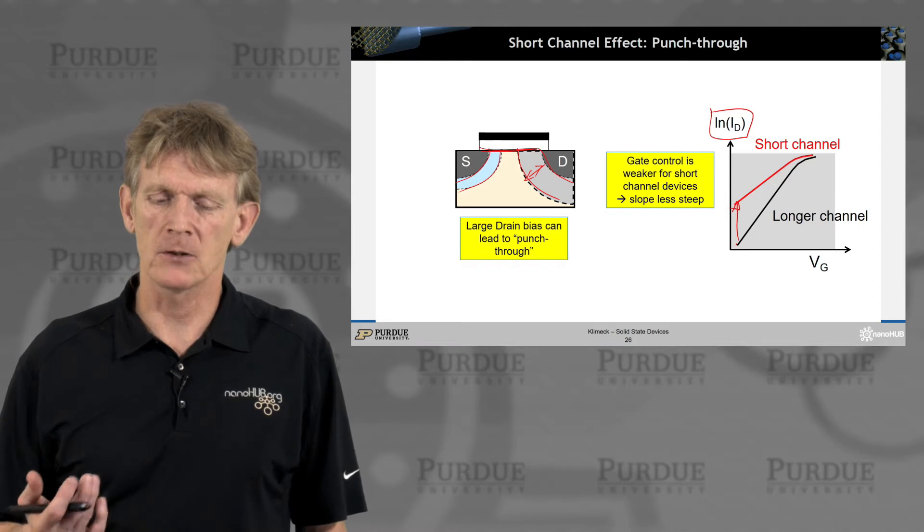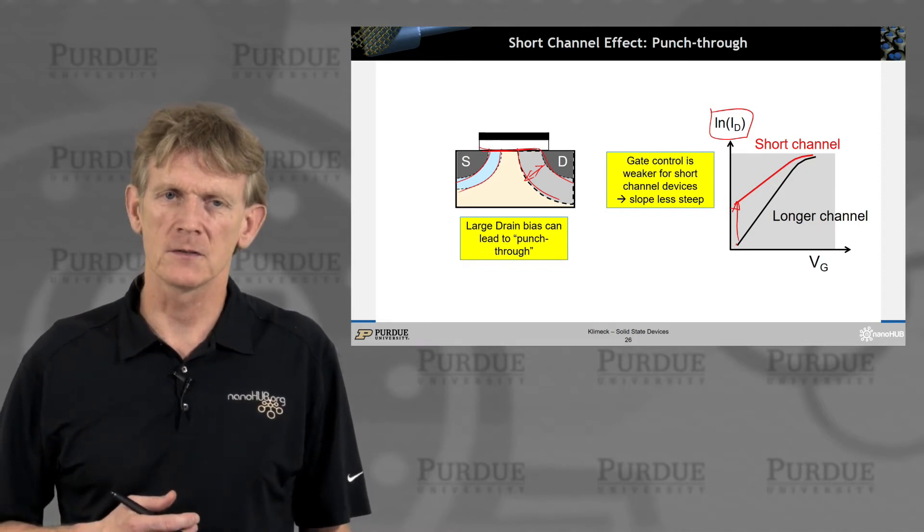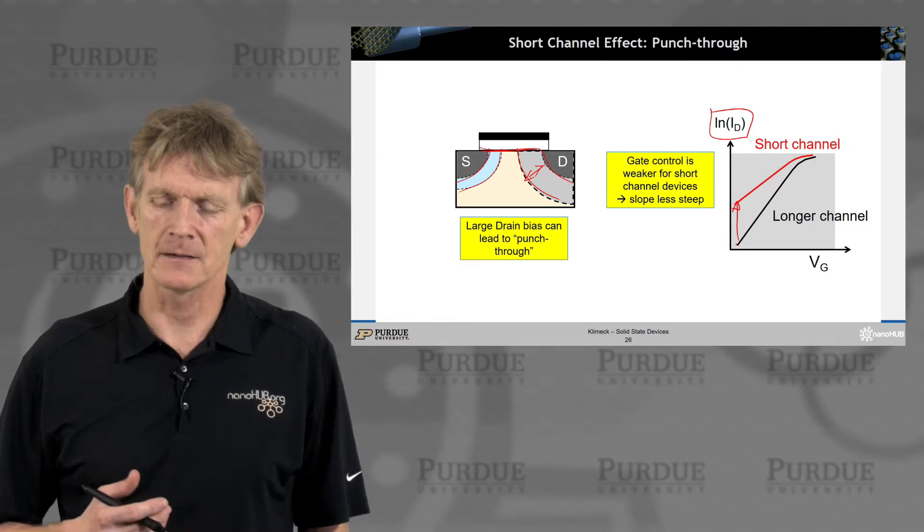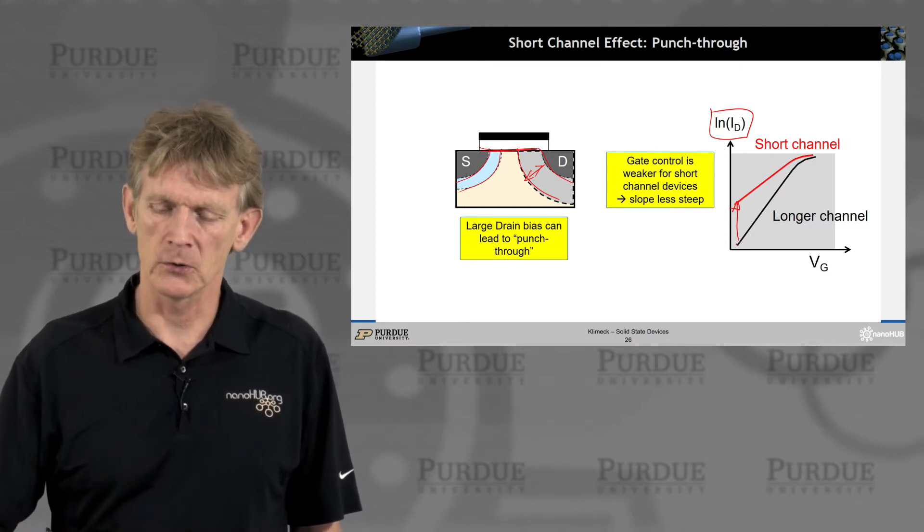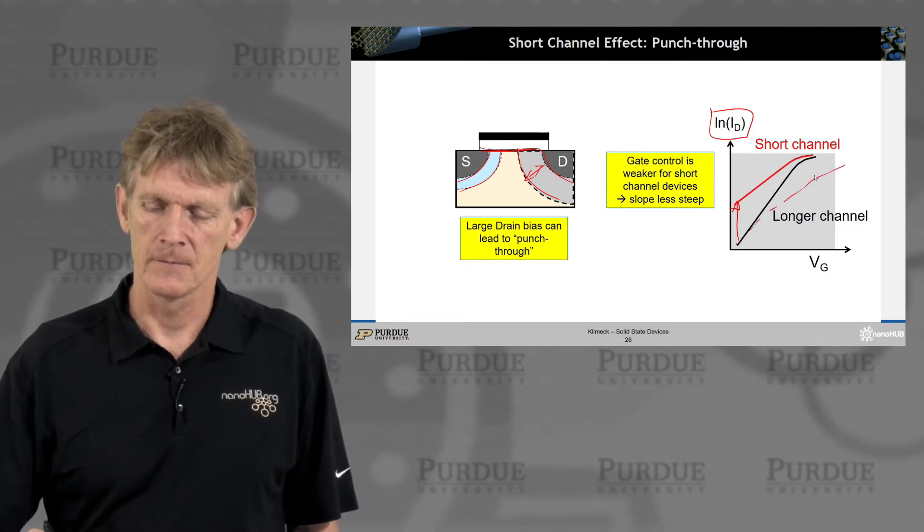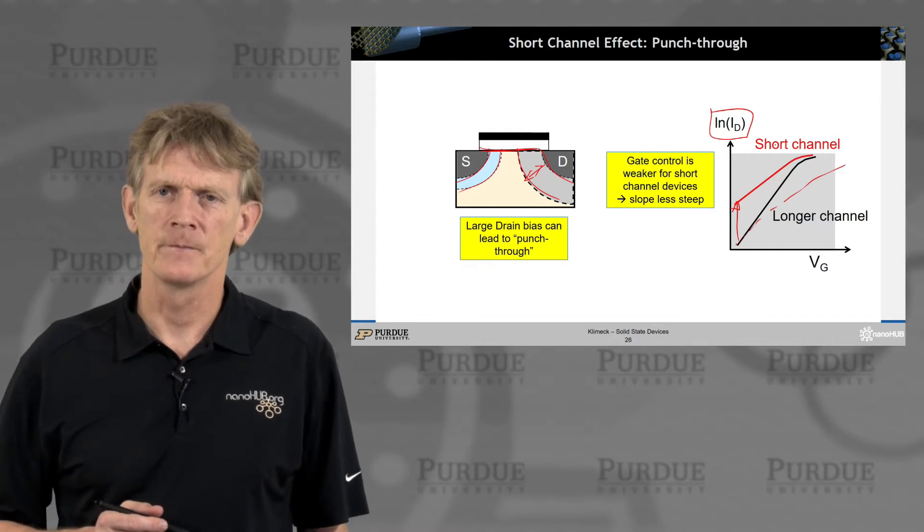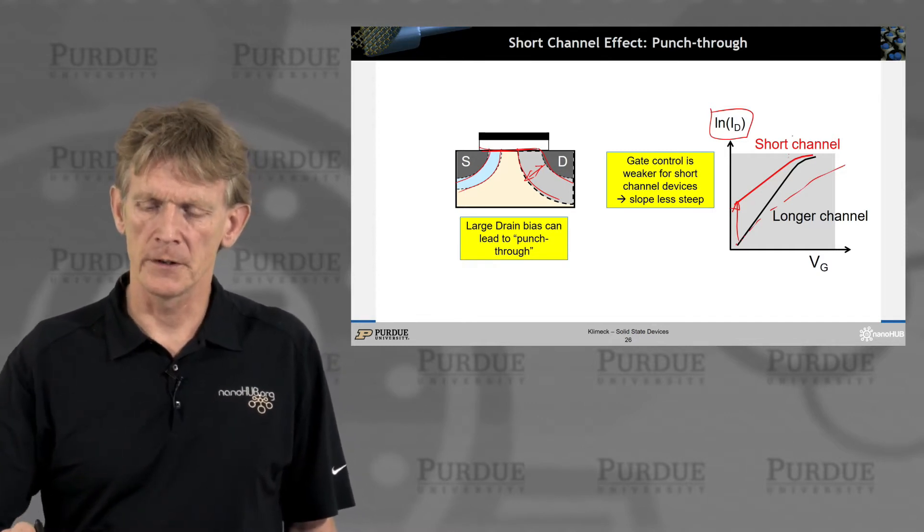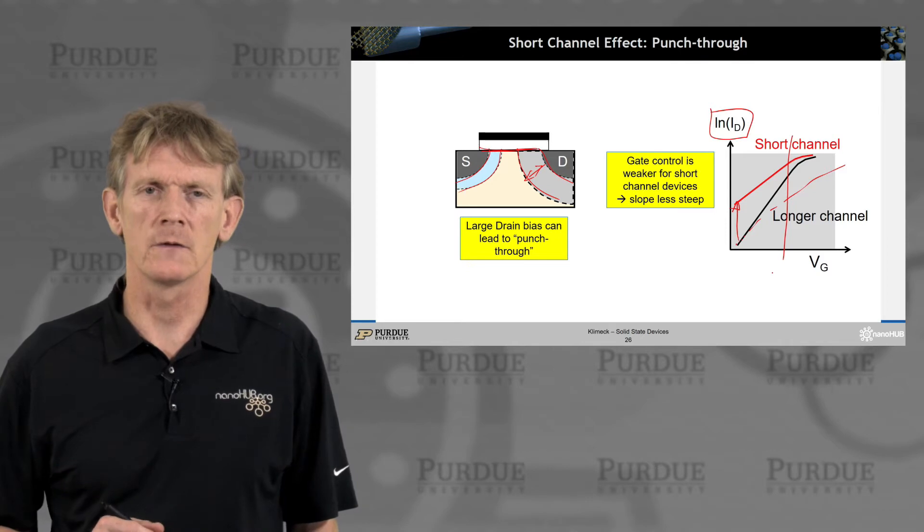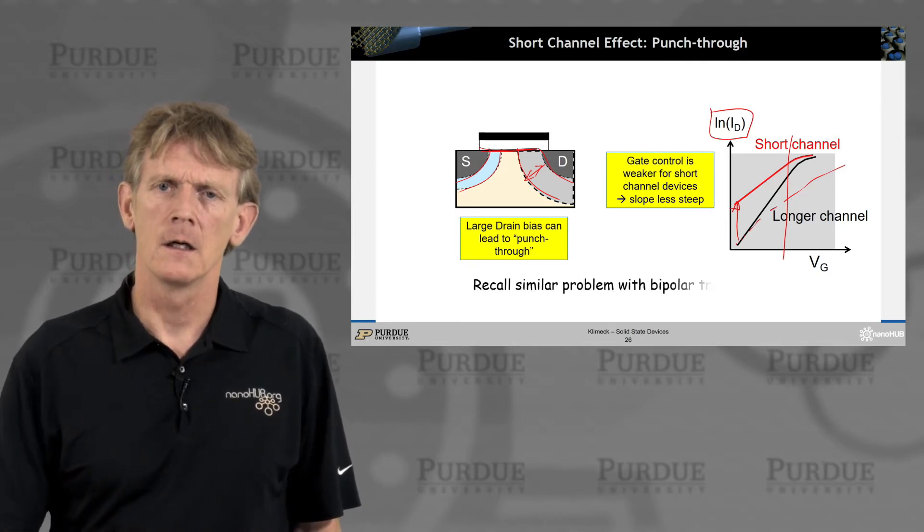As the gate control is weaker, the slope of this transistor is getting less, so it's less ideal. I had said most transistors look like this. If you translate this up with the appropriate threshold shift, you see that the curves are identical.